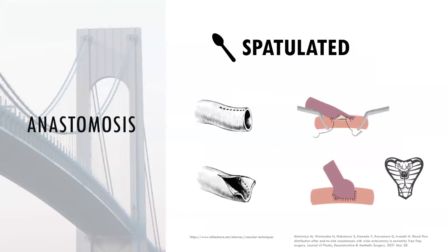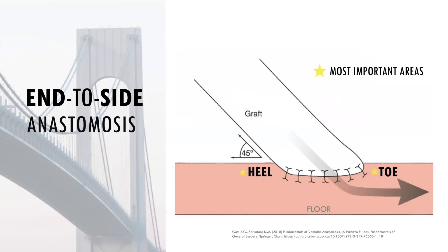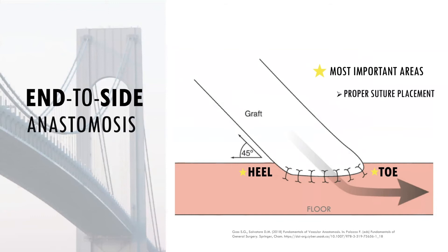The toe and heel are the most crucial points of an end-to-side anastomosis. The toe is the point of the anastomosis that sits furthest along the vessel, while the heel is the end that sits closest. To visualize this, place your palm on your lateral thigh with your elbow bent: your arm is the bypass graft, your leg is the outflow artery, your fingertips are the toe, and your palm near the wrist is the heel. Proper placement of sutures at the heel and toe is very important since these locations are awkward and difficult to repair. Improper placement can narrow the anastomosis and result in anastomotic leaks. Knots should not be placed at the toe or heel.